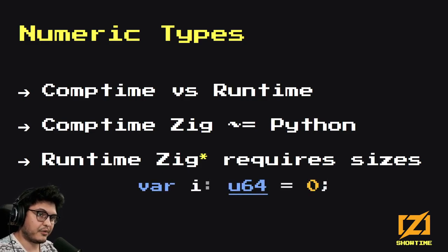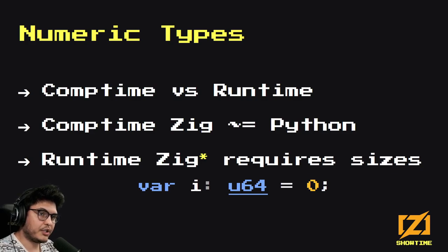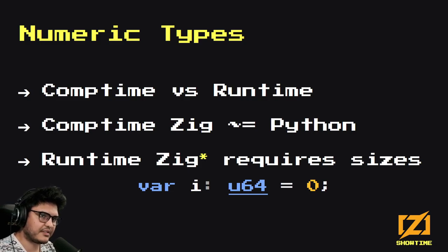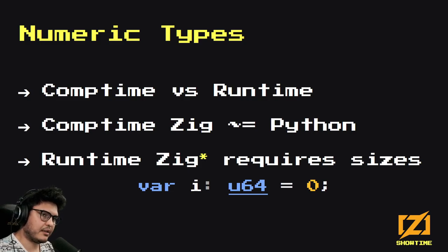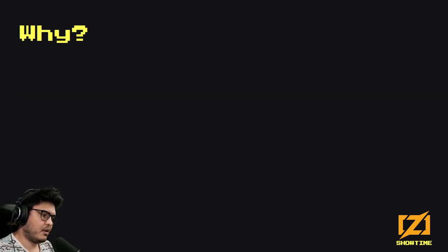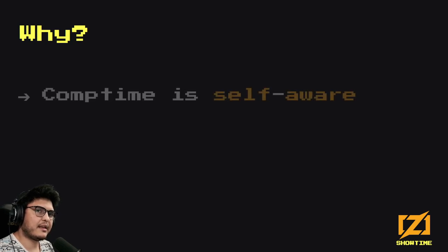One way of fixing it is to write a colon and then the type — u64 is a reasonable choice, not necessarily the right one every time, but that's how you're supposed to write your numbers most of the time. So why is it like that?